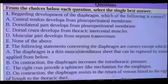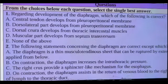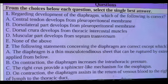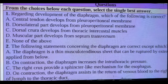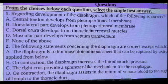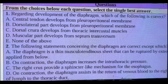This question is as follows, regarding the development of the diaphragm, which of the following is correct? Central tendon develops from pleuroperitoneal membrane; dorsal or dorsolateral part develops from pleuroperitoneal membrane; dorsal crura develops from thoracic intercostal muscles; muscular part develops from septum transversum; or none of the above.